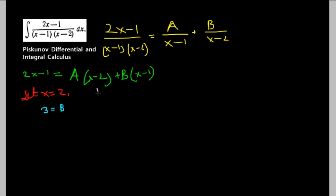Now what if we set x equals 1? This term will disappear, and I'll be left with only a linear equation in A. So 2 minus 1 is 1 equals 1 minus 2, which is minus 1. So it's minus A, which means A is negative 1.